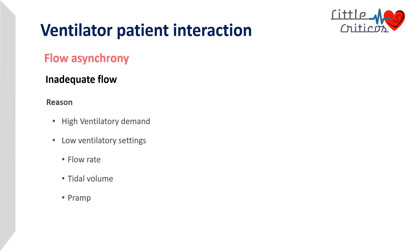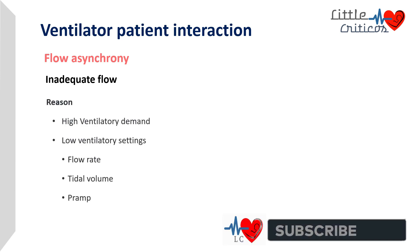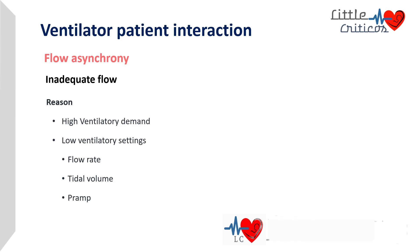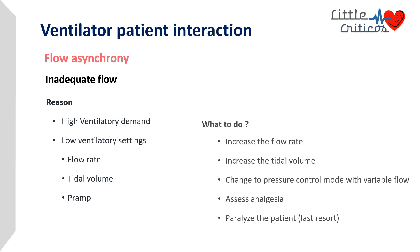Inadequate flow commonly results from high ventilatory demand in settings such as ARDS, or from low ventilator settings such as inappropriately low flow rate, tidal volume, or P-ramp. Increasing flow rate or tidal volume to suit the patient's ventilatory demand, or changing to pressure-control mode which delivers variable flow, may help. Analgesia is an important component to reduce flow asynchrony, and paralysis should be a last resort after correcting flows and tidal volumes.